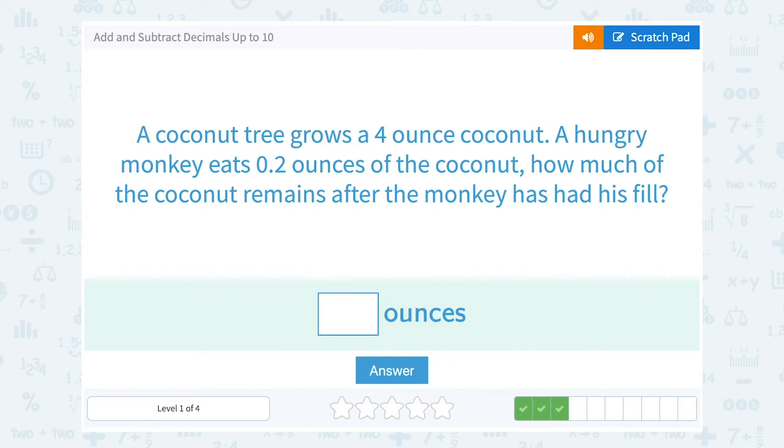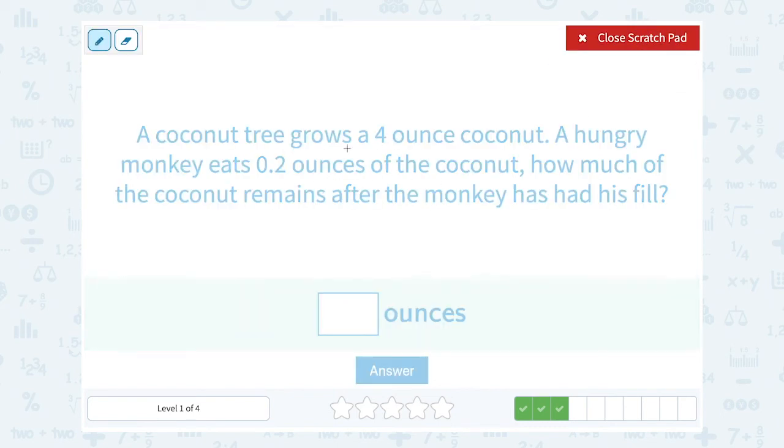A coconut tree grows a 4 ounce coconut. A hungry monkey eats 0.2 ounces of the coconut. How much of the coconut remains after the monkey has had his fill? Well if it started out as a 4 ounce coconut and then 0.2 ounces of it get eaten, how much is remaining? Well remaining is a key word that lets us know we're going to subtract. It started out at 4 ounces.